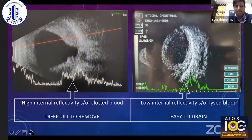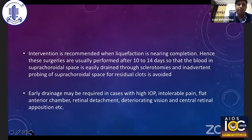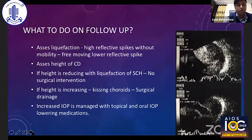Low internal reflectivity in the suprachoroidal space on ultrasound is suggestive of lysed blood, which would be relatively easy to remove. Generally it takes about 10 to 14 days for the blood to lyse, so this is the ideal time at which suprachoroidal drainage, if needed, should be attempted. Early drainage may be required in cases with high IOP, intolerable pain, flat anterior chamber, coexisting retinal detachment, deteriorating vision, or presence of kissing choroidals.